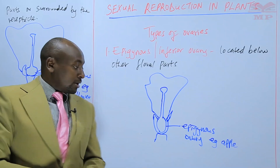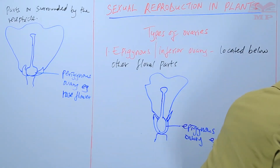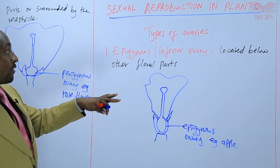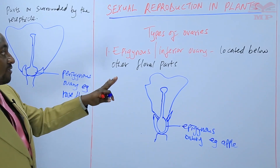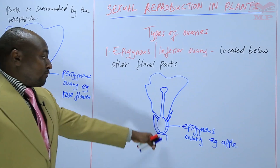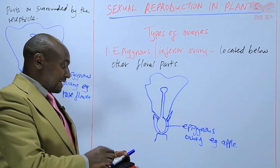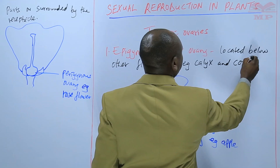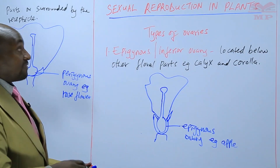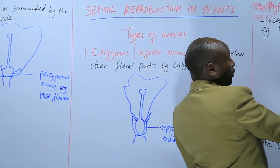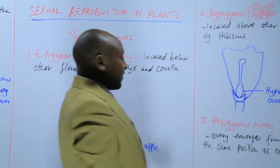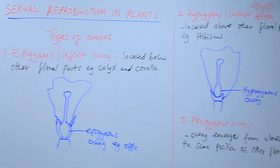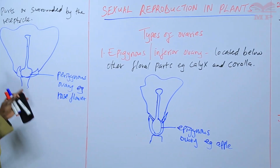So those are the three types of ovaries that we have. We shall see more terms that are used to describe the flower; this was just describing the types of ovaries. Epigynous or inferior is located below other floral parts such as the calyx and corolla. Hypogynous ovary is superior and is located above the other floral parts. Then we have the perigynous ovary, where it is almost at the same position as the other floral parts — it occurs within or surrounded by the receptacle.